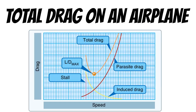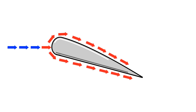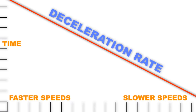But the real culprit here is induced drag. This is simply the drag that's created as a byproduct of lift. As you can see from this chart, induced drag increases exponentially as the aircraft slows down. Because of that, the deceleration of an airplane is no longer linear.